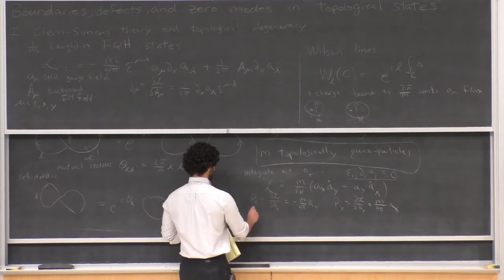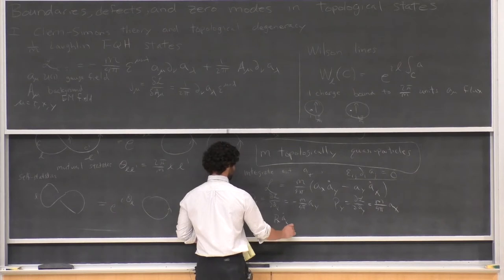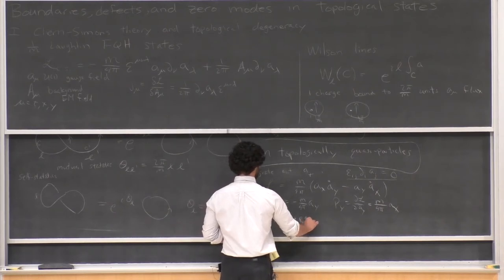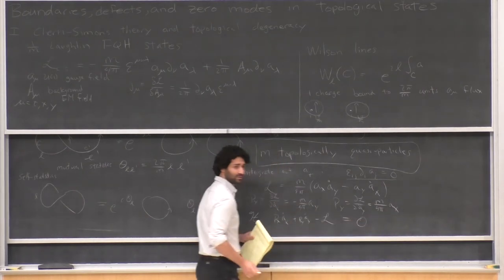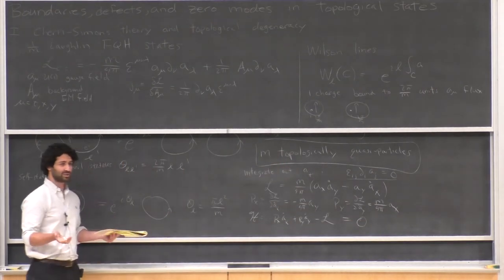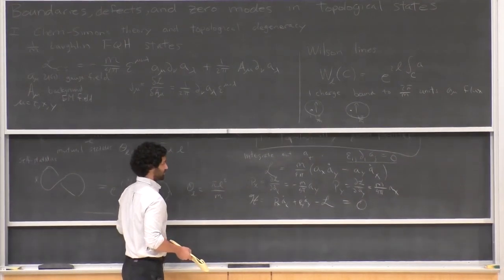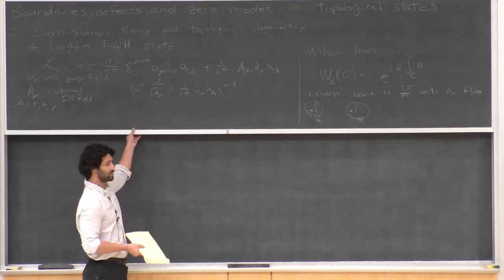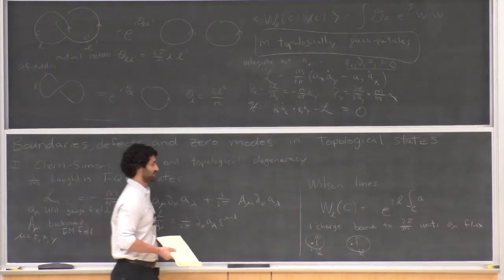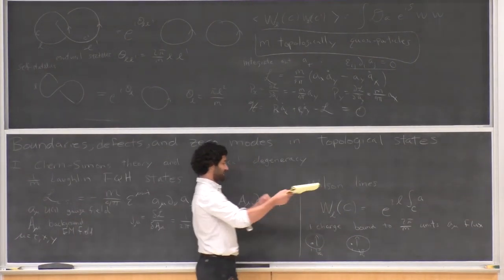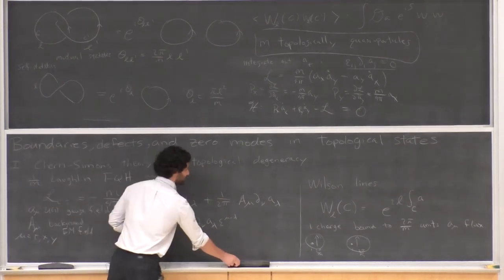The Hamiltonian of this system is zero. You might think it's completely trivial, but it's not — it has these operators corresponding to flux composites that braid nontrivially with each other. Moreover, if we put the system on an interesting surface such as a torus, we find something peculiar.